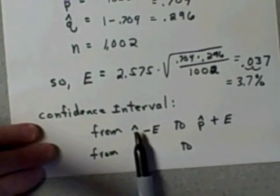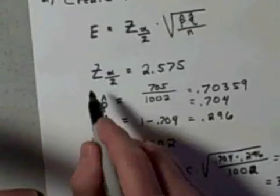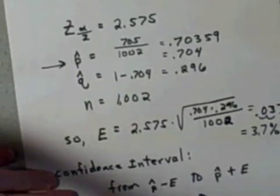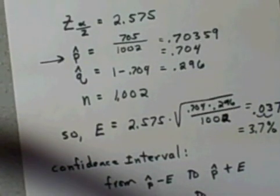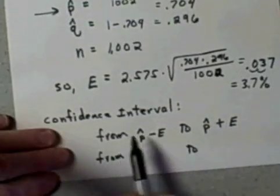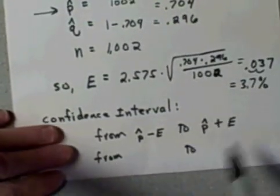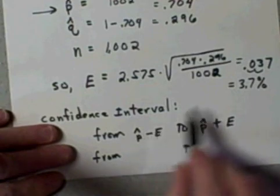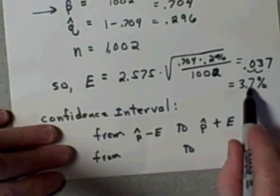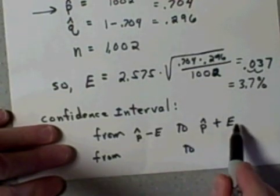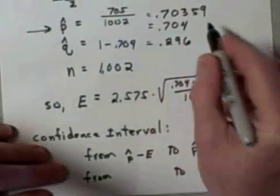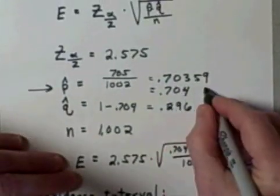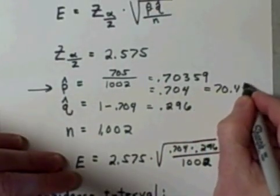Our confidence interval is always built on p hat, starting with p hat, which is called the point estimate. We're going to go from p hat minus this percent to p hat plus this percent. Well, as a percent we said this was about 70.4%.